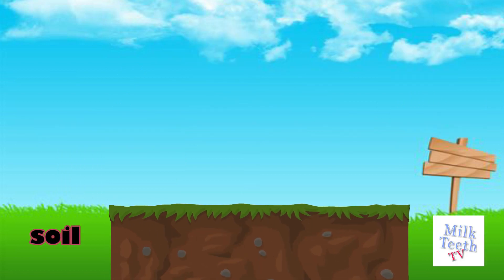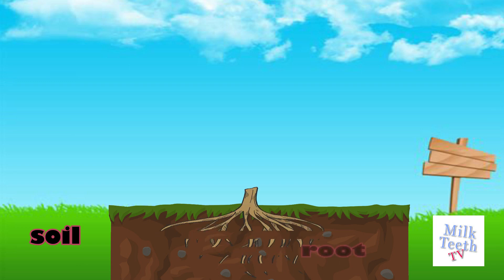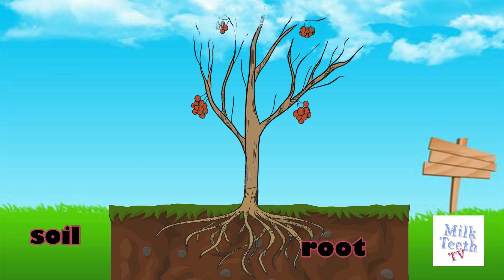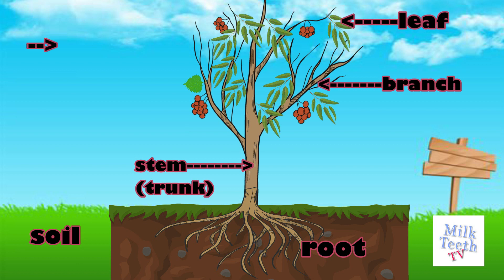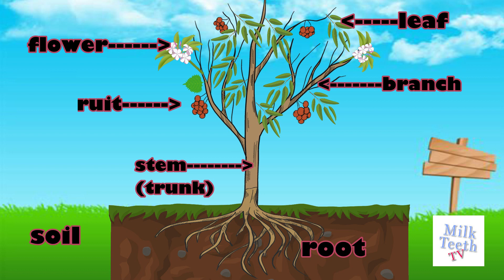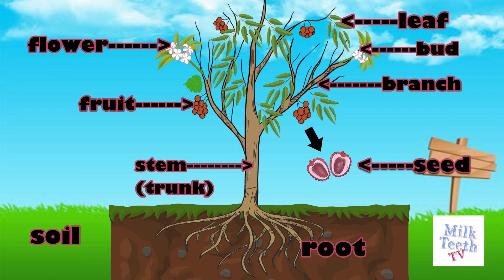Soil, root, stem or trunk, branch, leaf, flower, fruit, bud, and seed — all are parts of a plant.